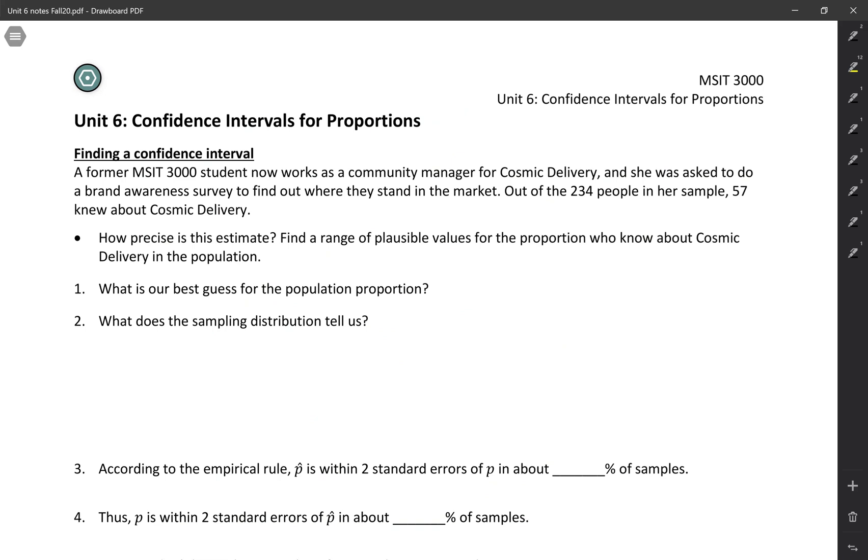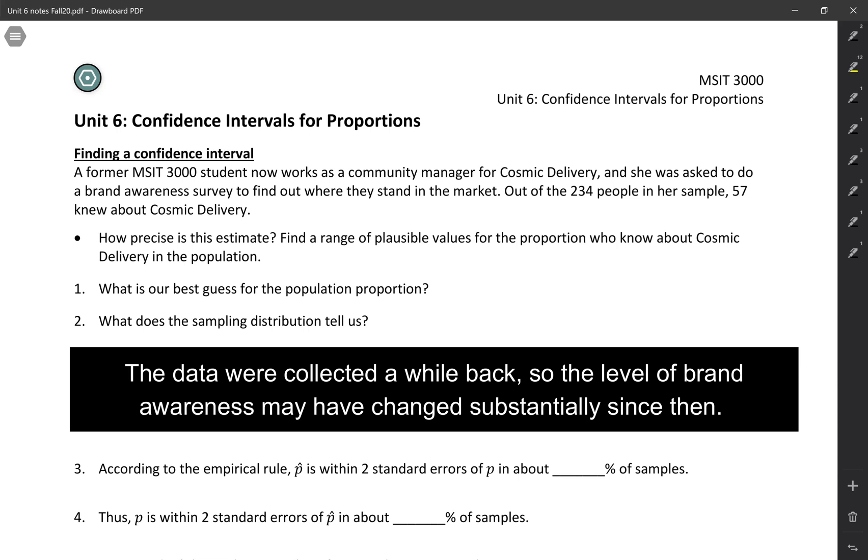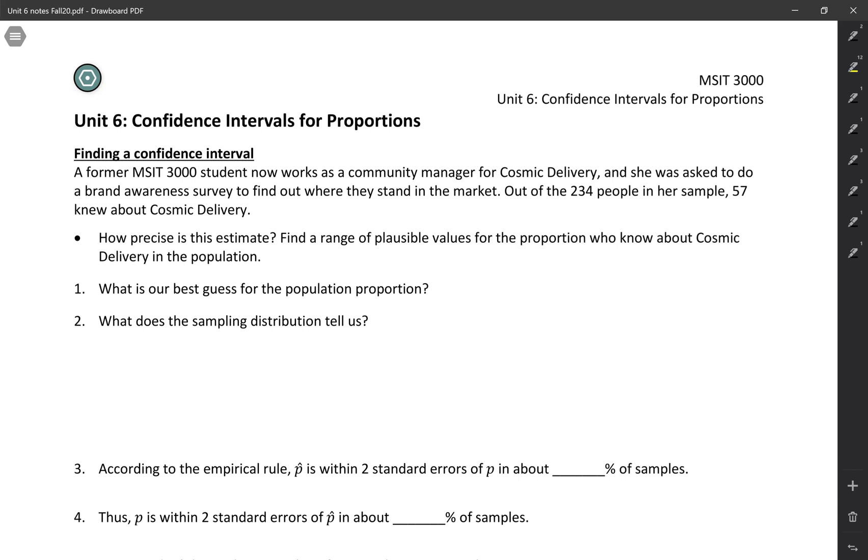So this student ended up taking a sample of 234 people. And of those, 57 knew about Cosmic Delivery. So basically, we've got our best guess for the population proportion is this sample proportion, 57 out of 234.